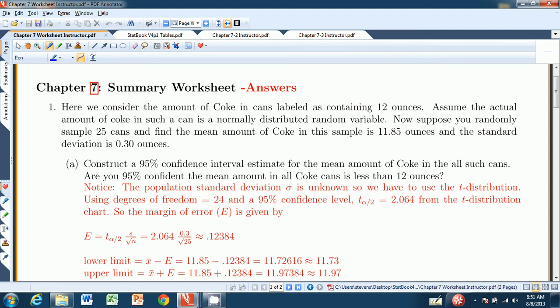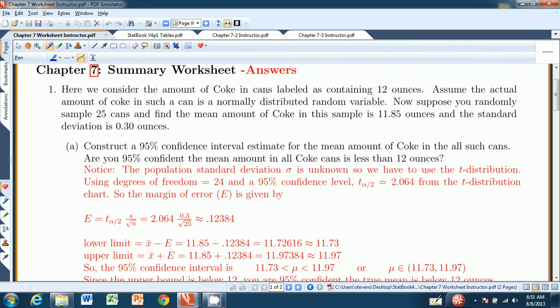Hello and welcome to the Chapter 7 Summary Worksheet from Stevens' Introduction to Statistics, The Think and Do Book. Here we're just going to go over some problems from Chapter 7, and it is worth noting that these solutions are actually printed in the back of your book. So if we're moving along too quickly, you can always check back there. Let's take a look at this first problem.